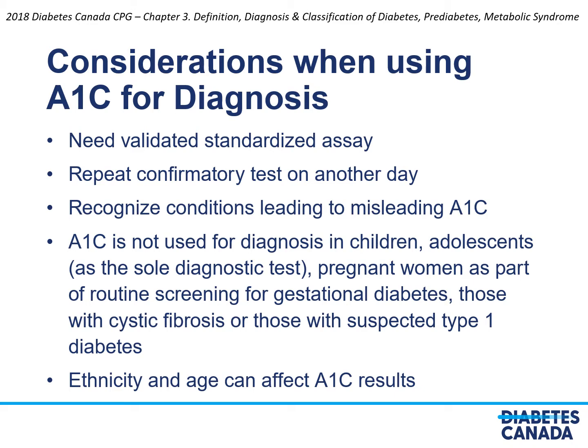Hemoglobin A1c is a test that requires a little extra thinking before using it to make a diagnosis of diabetes. It needs to be done using a validated standardized assay. Repeat confirmatory testing can be done on a separate day with the same test. We need to recognize that there are certain conditions that lead to a misleading hemoglobin A1c result, and A1c has not been adequately validated for diagnosis of diabetes in children and adolescents, as the sole test in pregnant women, or in those with cystic fibrosis or suspected type 1 diabetes.